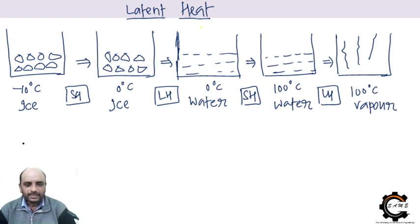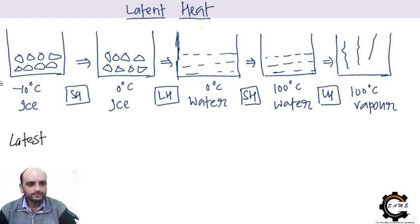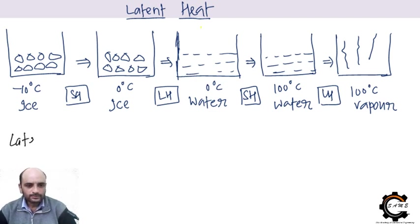Please write down this definition: latent heat is the amount of heat absorbed during a phase change, in which there is no temperature rise or fall of matter.